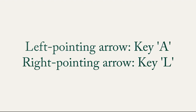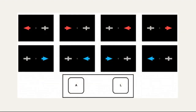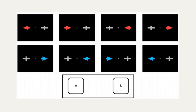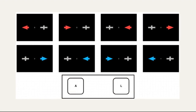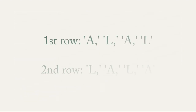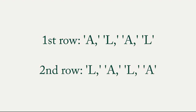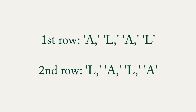Regardless of which side the arrows are, participants are required to press A or L accordingly. These arrows are examples of the Simon effect model. Take a look and try to guess what you have to press. If you indicated the keys A, L, A, L on the first row from the previous slide, then you are correct.